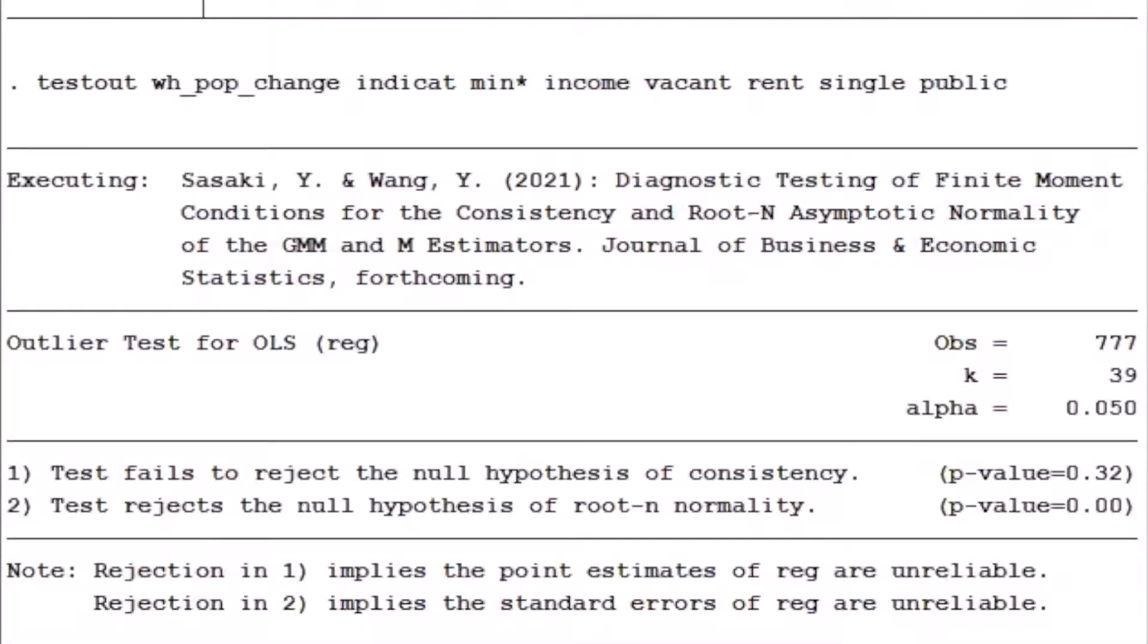The result shows that the test fails to reject the null hypothesis of consistency, implying that the point estimate is credible. On the other hand, the test fails to reject the null hypothesis of root n normality, implying that the standard errors are not credible.